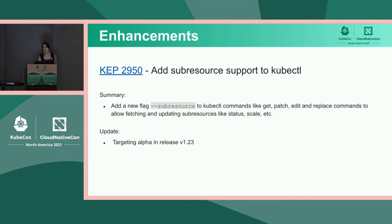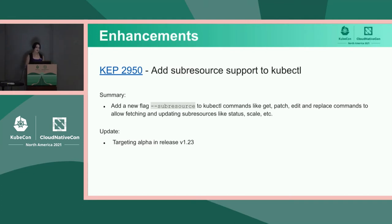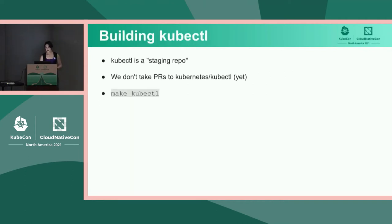Last but not least, we have KEP 2950, which is adding sub-resource support to kubectl. This would add a new flag so that commands like get, patch, edit, and replace can deal with sub-resources like status and scale, which is not possible today. We're targeting alpha for release 1.23 with this feature. With that, I'm going to hand it over to Eddie to tell us about building and testing kubectl.